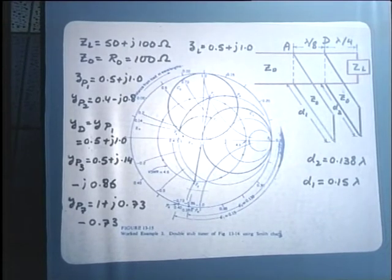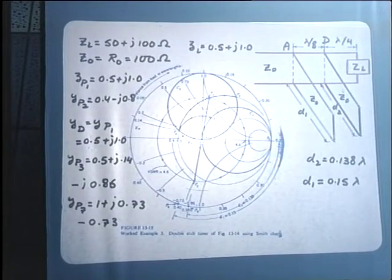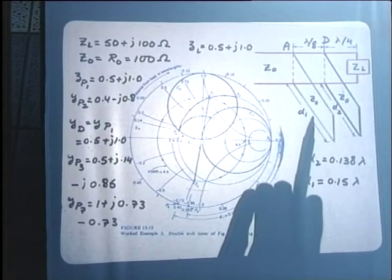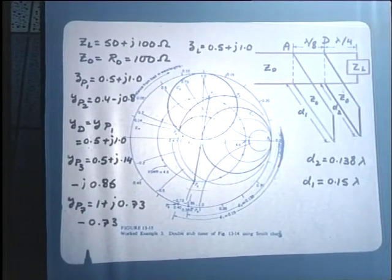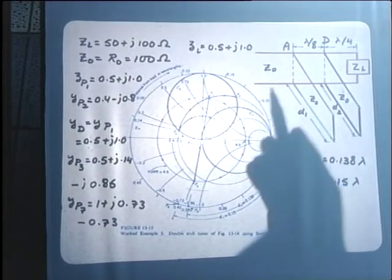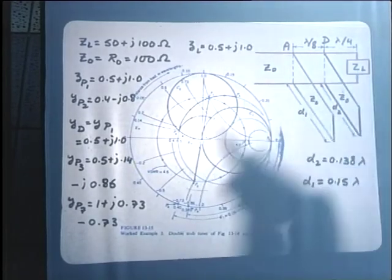A student asks whether the characteristic impedance of the stubs matters, since they are short-circuited. The answer is that it hardly matters: no matter what characteristic impedance the stub transmission lines have, one can achieve the required susceptance by adjusting the length. The normalized susceptance values are obtained using the characteristic admittance. For simplicity and practical convenience, the stubs are typically given the same characteristic impedance as the main transmission line.